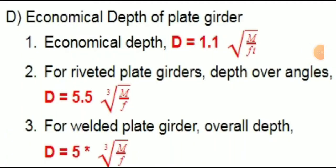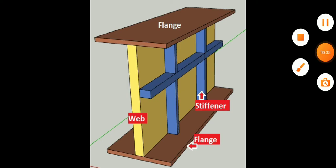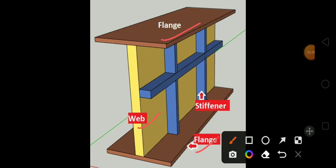Hello everybody, welcome back to the channel. In this video we are going to see the economical depth of plate girder — what is economical depth of plate girder and how can we calculate it. Before this video I want to show you the plate girder photo. You can see here this is our plate girder. The top and bottom are the flanges, and these two are joined by the web. This is also a stiffener — stiffeners are of both types: horizontal and vertical. This is the 3D photo of the plate girder so you can easily understand each and every component.